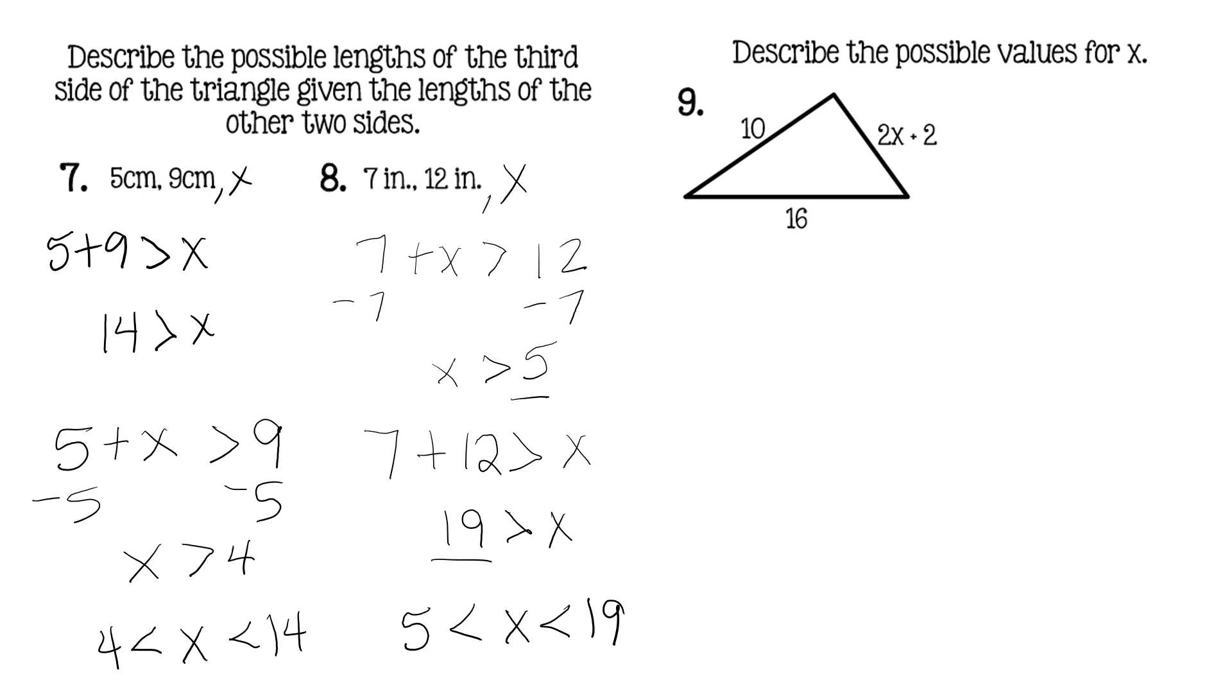So what about here if we don't know the third side, and they give us an expression? Same idea, you have 10, 16, and 2X plus 2 as your sides. So same condition, 16 could either be the largest side, or the 2X plus 2 could be the largest side. Cannot go by the figures because they're not necessarily drawn to scale. So you have two options. Let's first do that the 2X plus 2 is the largest side. So let's take 10 plus 16, which has to be greater than 2X plus 2. Solve that. So that's 26 is greater than 2X plus 2.